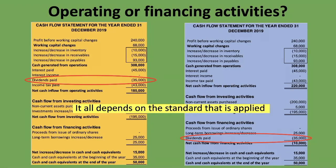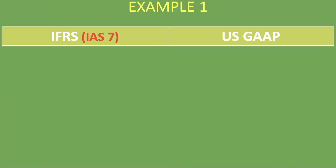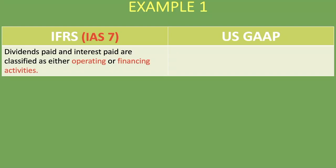The answer is not so clear cut, because it all depends on the standard that is applied. Let's look at the two common standards: we have IFRS — and IAS 7 talks about cash flow statements — and then we have US GAAP, or US Generally Accepted Accounting Practice. With IFRS, dividends paid and interest paid are classified as either operating or financing activities, so you will see them under either section.